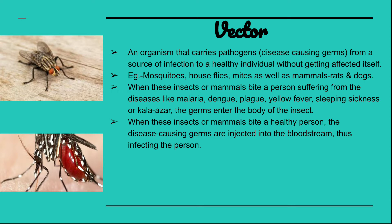Mosquitoes, houseflies, mites, and mammals like rats and dogs are all vectors. When these insects or mammals bite a person suffering from diseases like malaria, dengue, plague, yellow fever, sleeping sickness, or kala-azar, the germs enter the body of the insect. When these vectors then bite a healthy person, the disease-causing germs are injected into the bloodstream, thus infecting that person.